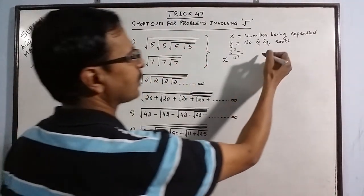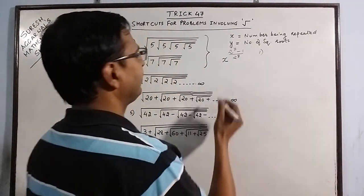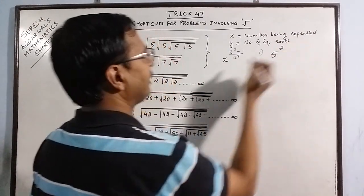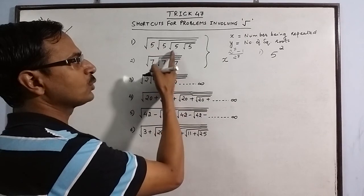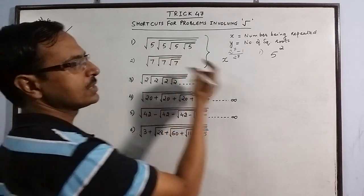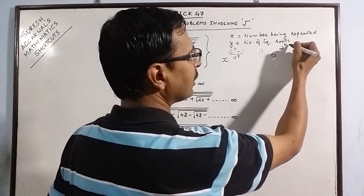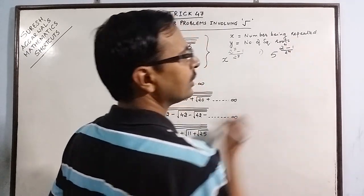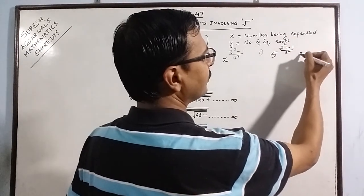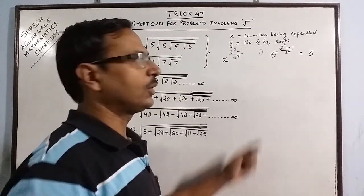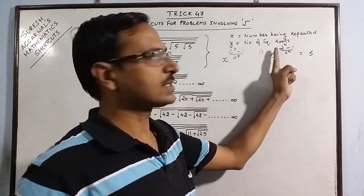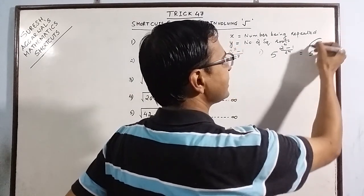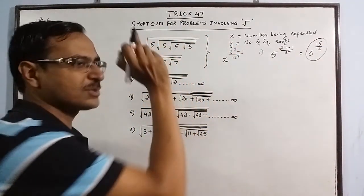Like in this first problem we have x as 5 and 2 raised to power y. Y means the number of square roots, so here we have 4 square roots. So 2 raised to power 4 minus 1 upon 2 raised to power 4. The answer will be 5 raised to power... now, 2 raised to power 4 is 16. So 16 minus 1 is 15 upon 16. So this is the answer for the first problem.